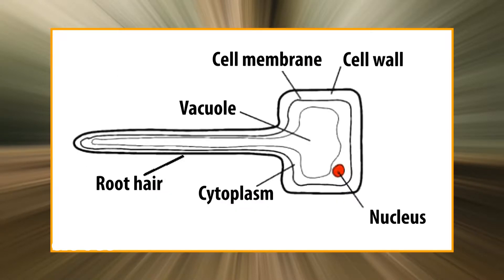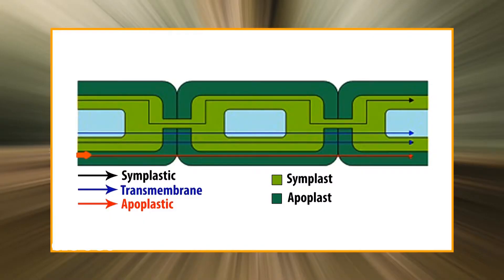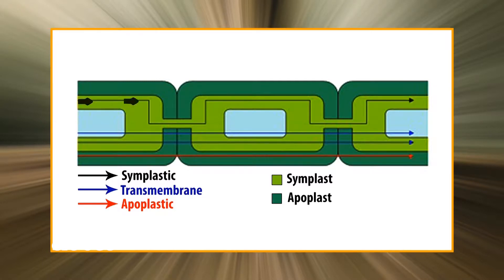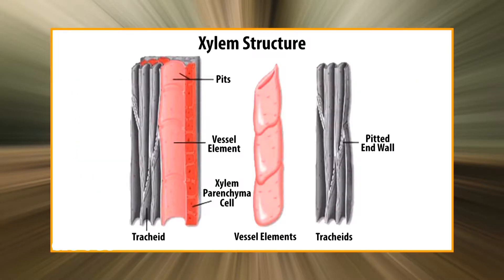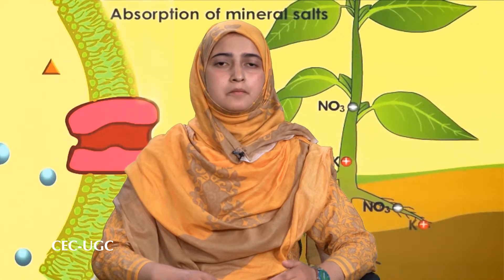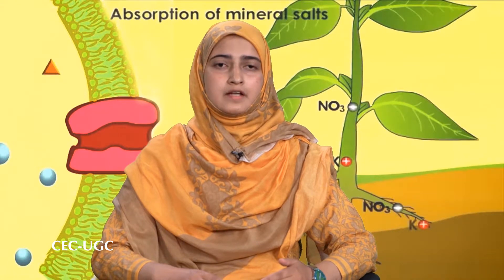Once inside the epidermal cells of the root, the mineral salts in their ionic form move from one cell to another by: (1) apoplastic pathway, i.e., through cell walls and intercellular spaces; (2) transmembrane pathway, i.e., by crossing membranes; and (3) symplastic pathway, i.e., through plasmodesmata. They ultimately reach xylem vessels and tracheids, from where they are carried to different parts of the shoot along with ascent of sap.